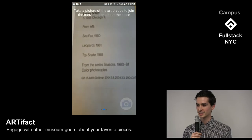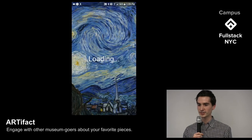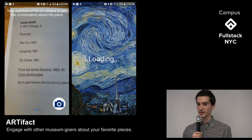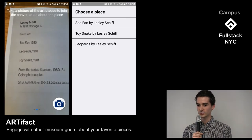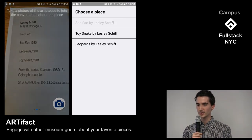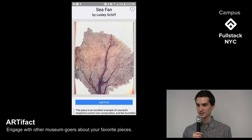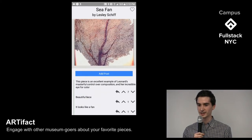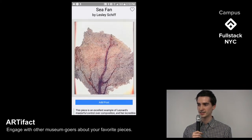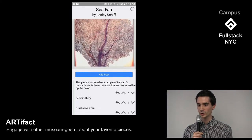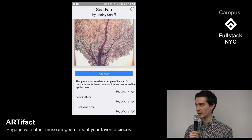Another challenge we faced is that there can be multiple works of art for any plaque. To address this, we wrote our own scoring algorithm that could select matched works based on piece title, artist name, and year of the piece. After a piece is identified, the user is taken to a forum where they can discuss the work.